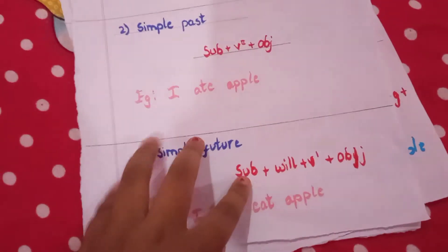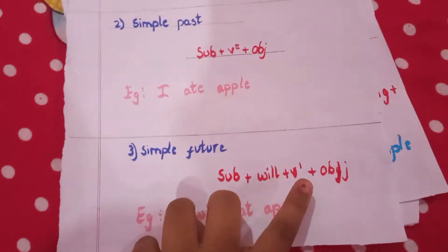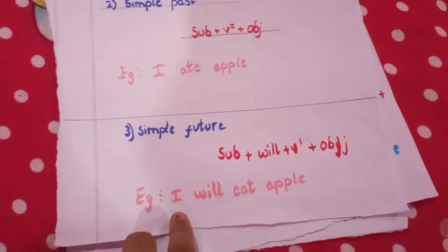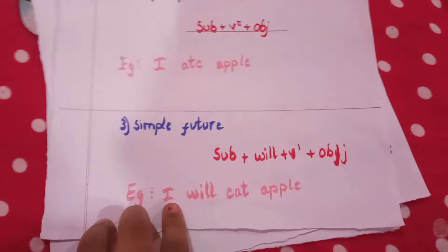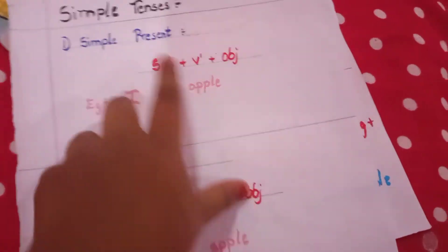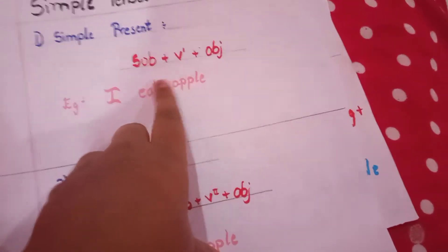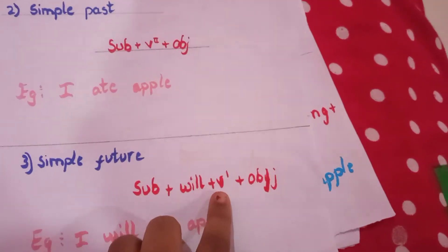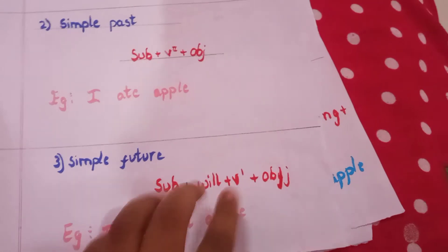Simple future: subject plus will plus V1 plus object. Example: 'I will eat apple.' In simple present V1 was 'eat', so here V1 is also 'eat' — I will eat apple.